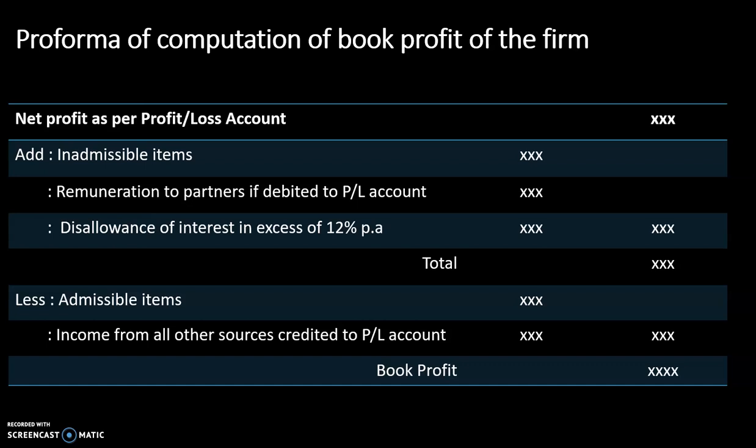In order to find out book profit, you will have to add these items up. Also, interest paid to partners in excess of 12 percent per annum — the excess amount above 12 percent per annum is to be added back under Section 40B.